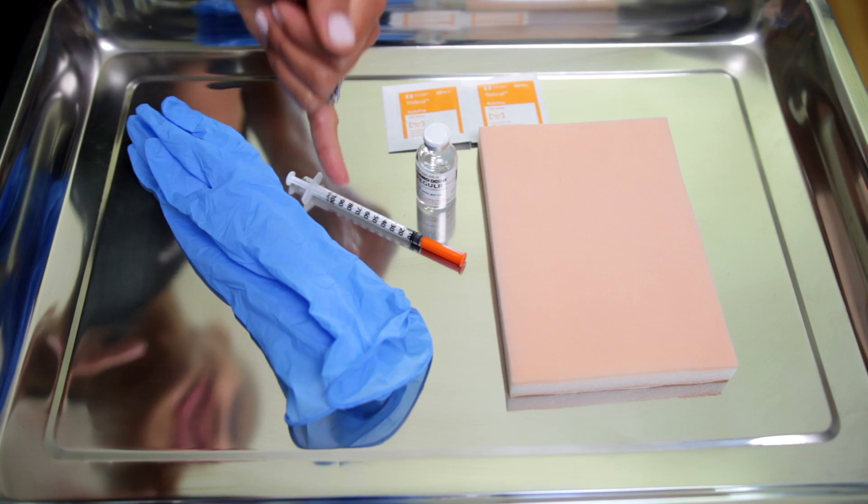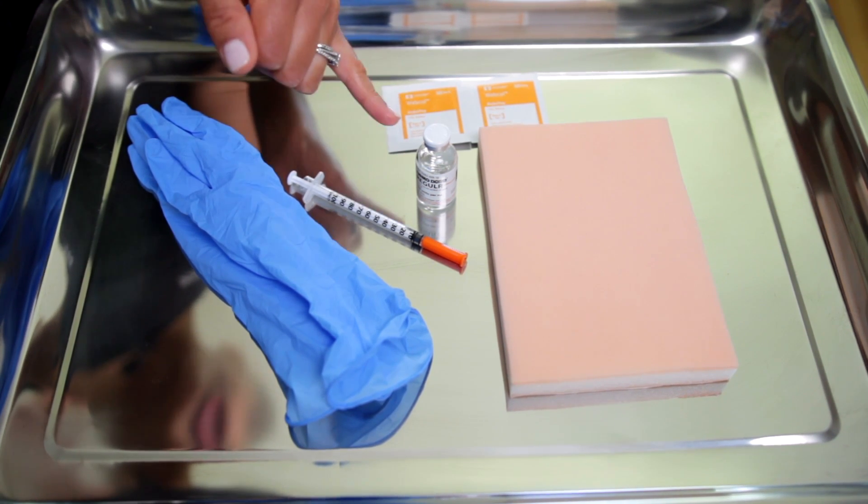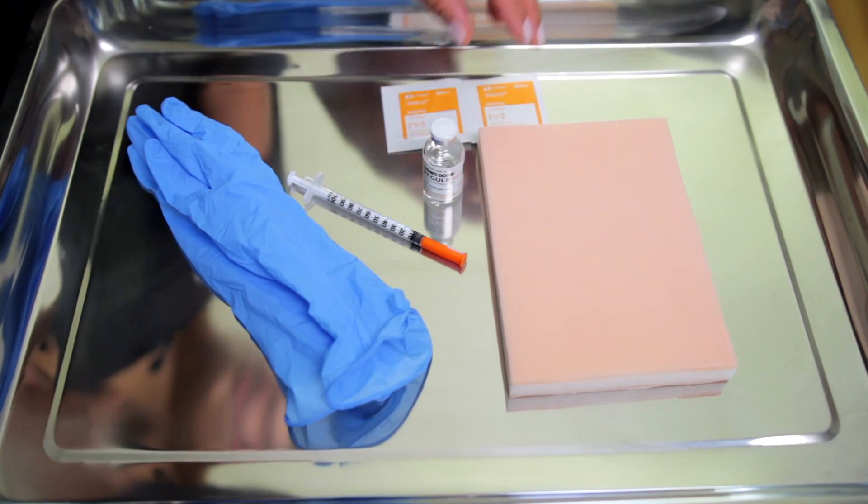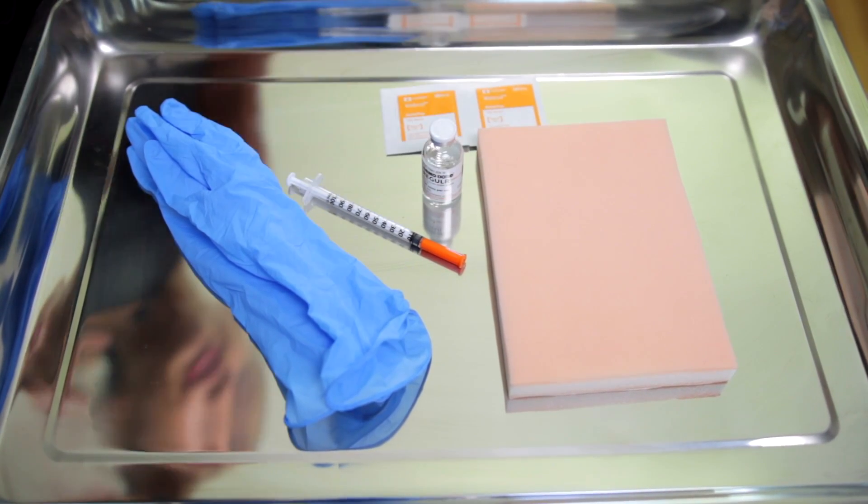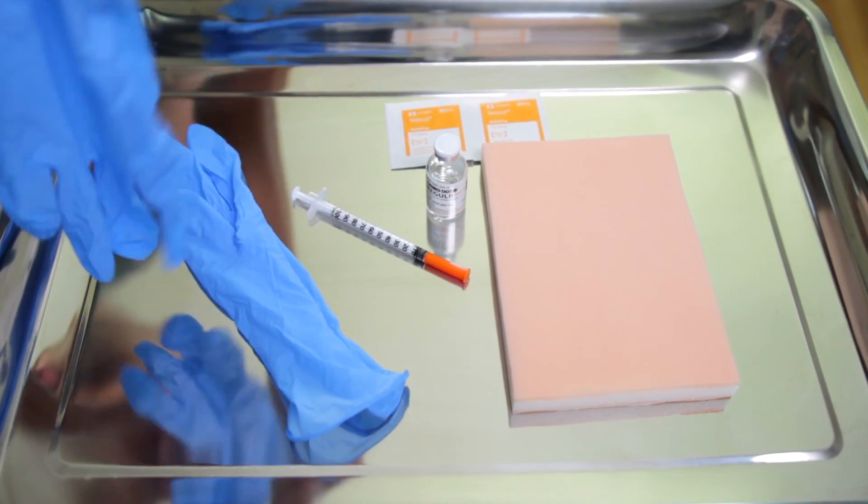So you have your insulin syringe, your pair of gloves, the right insulin for administration, which is regular insulin in this scenario, and then you have your alcohol prep. So after you've washed your hands, you're going to put on your gloves.